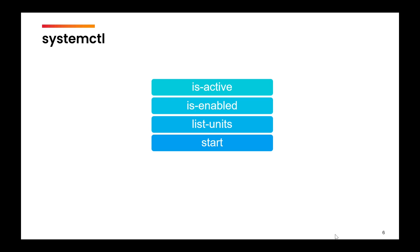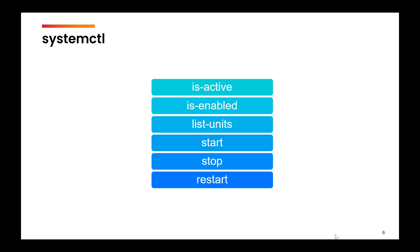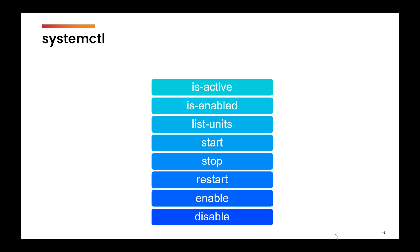Start means if the service is stopped and you want to start it, making it active. Stop means if you want to stop a running service. Restart is a combination of stop and start — if you want to stop and then start a service again, simply use the restart option. Enable will make the service automatically start at boot time, and disable means you will have to manually start the service at boot time.